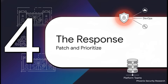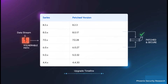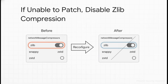This brings us to the most important part: the response. What are the concrete steps that security, DevOps, and platform teams need to be taking right now? The number one most effective thing you can do is upgrade. MongoDB has released patched versions for all supported branches that correctly check the decompressed message length. But if patching can't happen overnight, there is a critical temporary mitigation: you can disable the vulnerable compression algorithm. By changing the network message compressor setting to remove Zlib, you completely shut down this attack vector. You can stick with Snappy and Z-Standard, or even turn off compression entirely as a temporary fix.